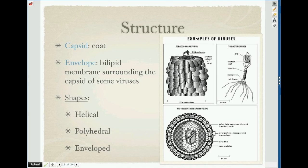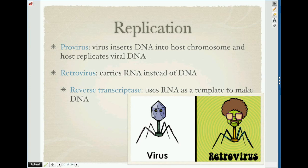Basically viruses have a coat or an outer covering, and then they have something called an envelope, which is a membrane surrounding the capsule of some viruses. And then they have some different shapes. This right here is the tobacco mosaic virus. This is a T4 bacteriophage. And this is actually the HIV virus, and it has a lipid envelope. So those are some common examples they might refer to.